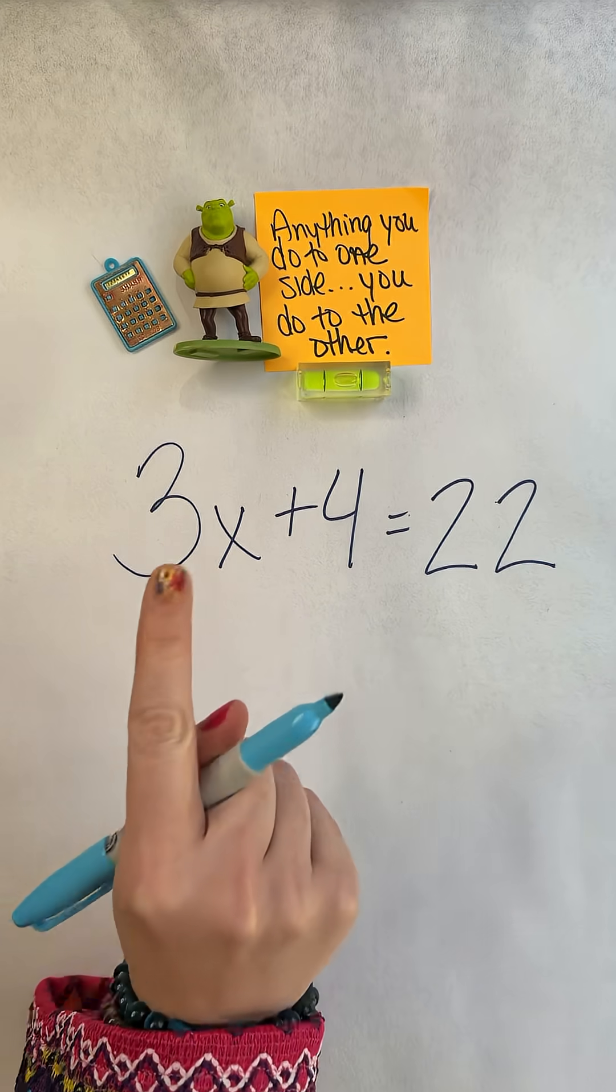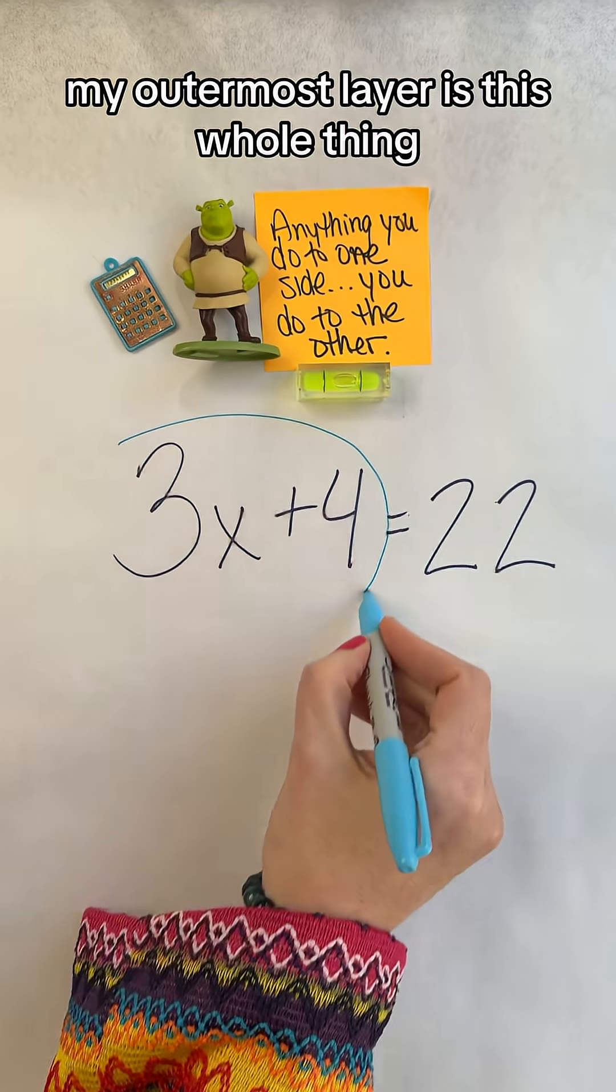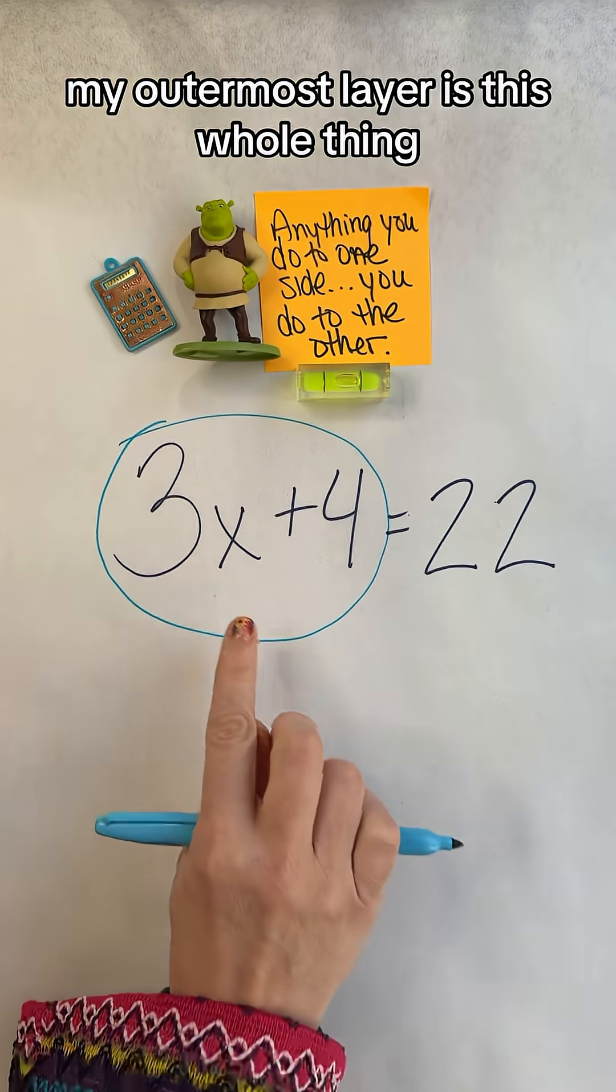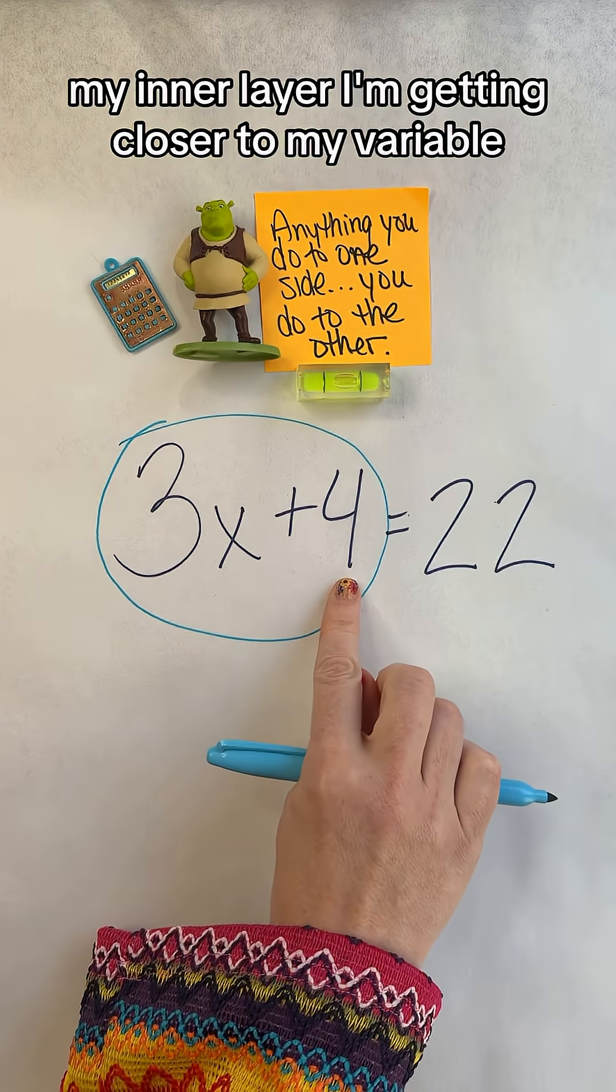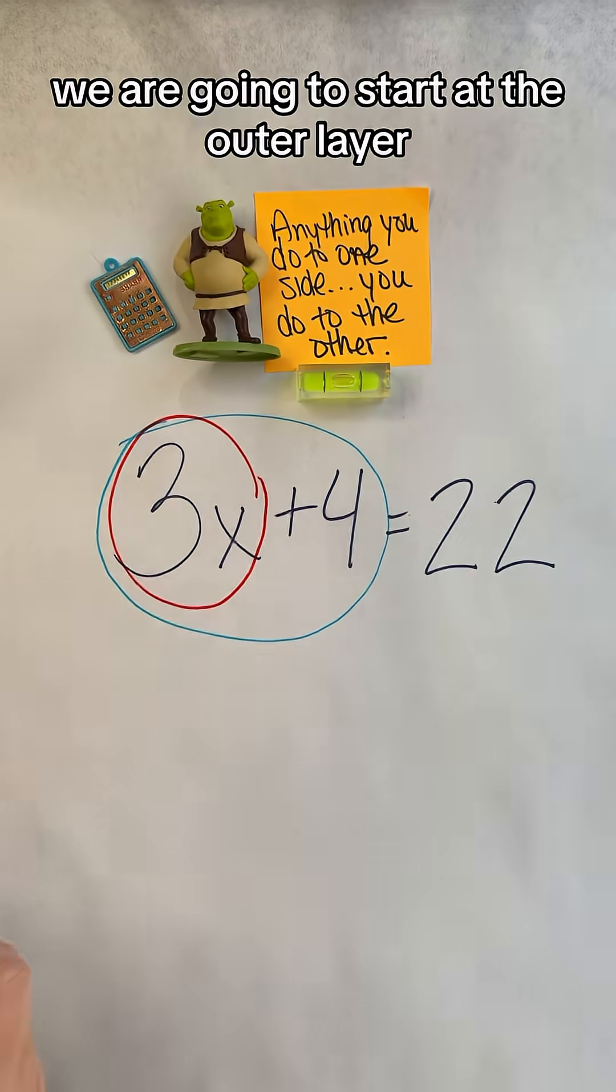What I have kids do is pick two colors. I have red and blue, and we create our layers. My outermost layer is this whole thing. My inner layer, I'm getting closer to my variable.